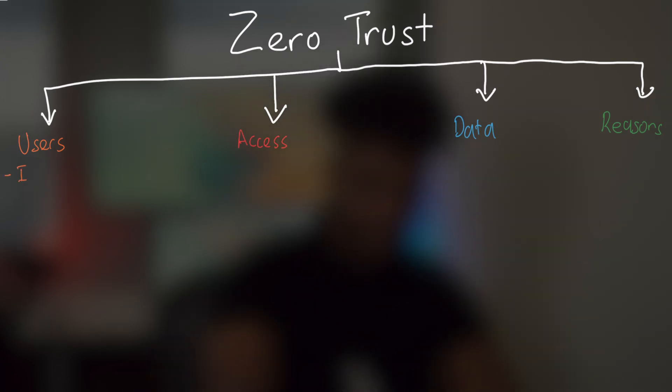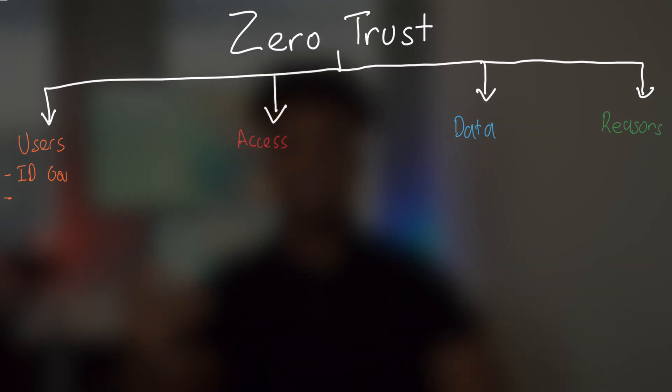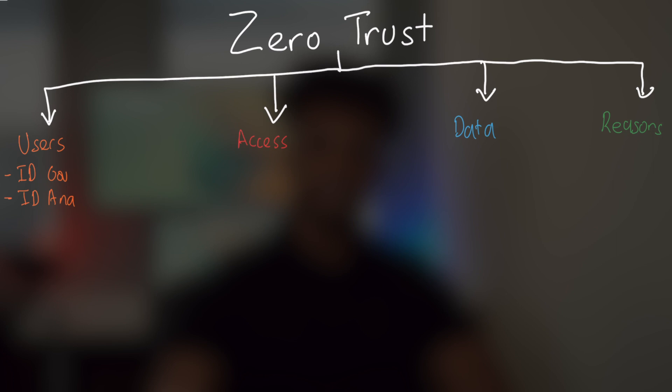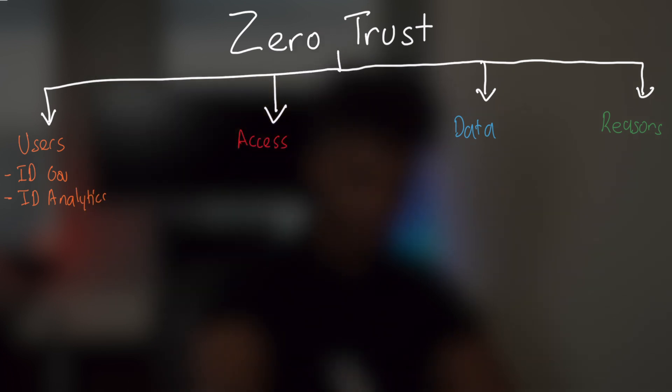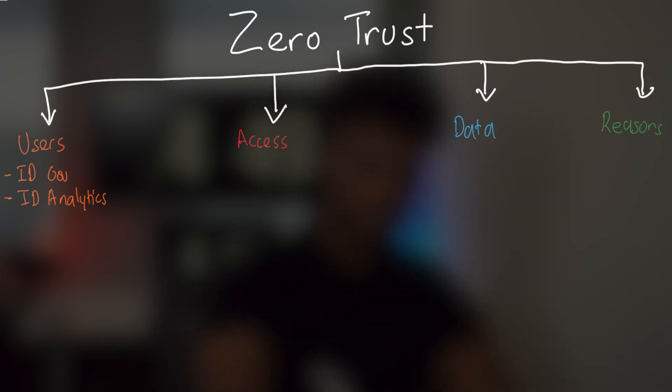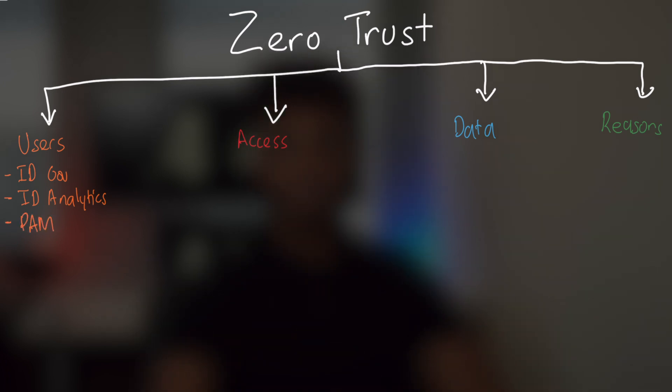First one is identity governance. And what this means is who has access to what in the organization. Number two is identity analytics. Does it make sense for this person or group to have access to this data? That's what we mean by identity analytics. And third is privileged account management, also known as PAM. This is for insider threats. For example, who's able to install or remove software, upgrade the operating system or modify system or application configurations.